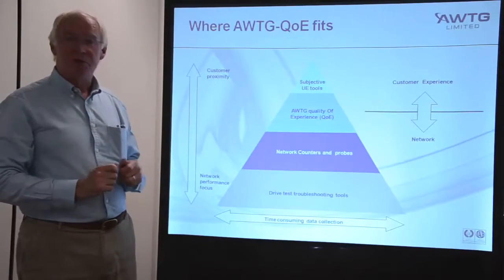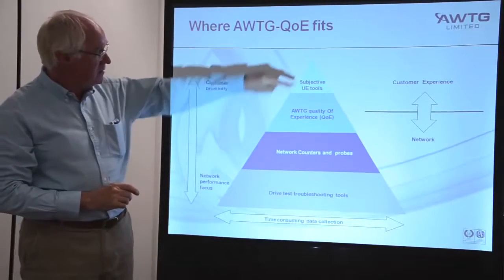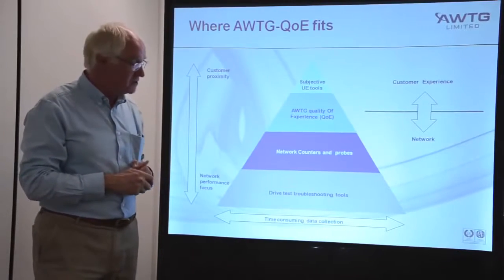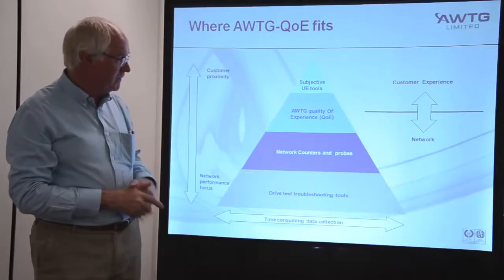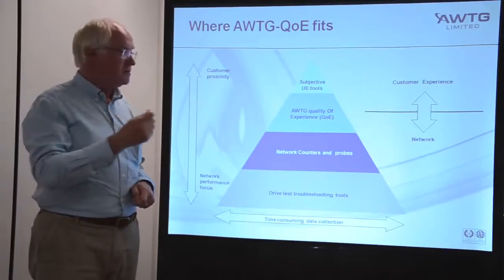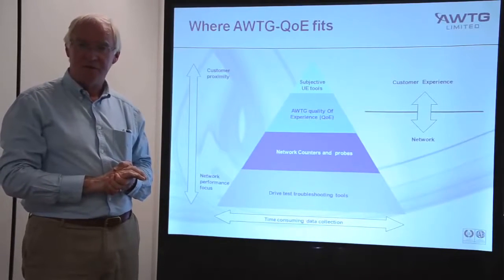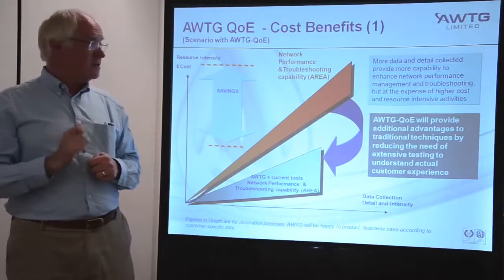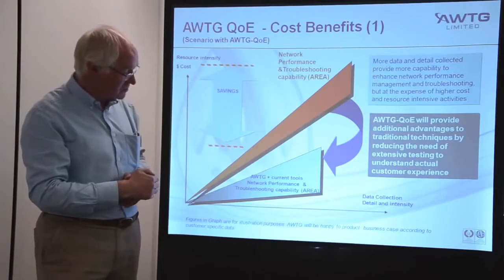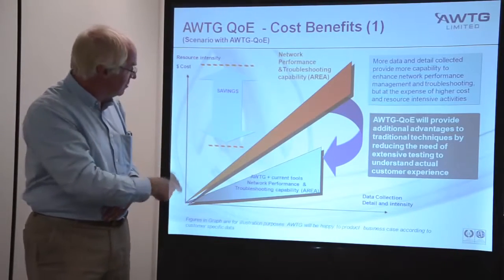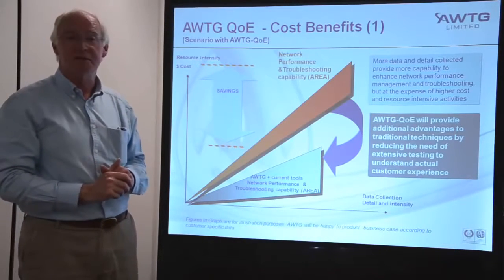The AWTG QoE tool sits near the top of a pyramid of measurements that are possible. Subjective UE tools would cover things like mean opinion scores. Detailed network measurements and KPIs require enormous amounts of data. The AWTG QoE tool seeks to minimize the amount of data you need to produce while still ensuring good quality of performance from your mobile network. There are also cost benefits — the more data you seek to achieve, the greater your cost levels will be. So there are real savings to be made by adopting a tool which starts with the customer experience and works back into the metrics of the network.